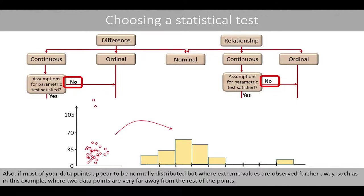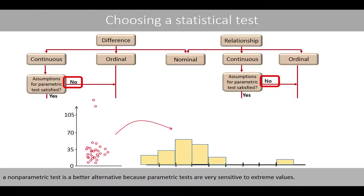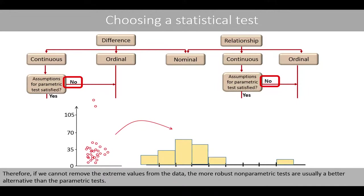Also, if most data points appear to be normally distributed but where extreme values are observed further away — such as in an example where two data points are very far away from the rest — a non-parametric test is a better alternative, because parametric tests are very sensitive to extreme values. Therefore, if we cannot remove the extreme values from the data, more robust non-parametric tests are usually a better alternative.